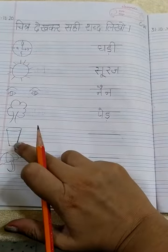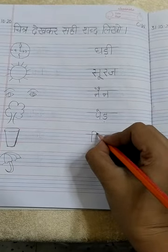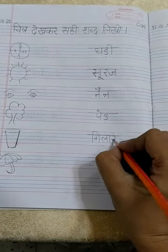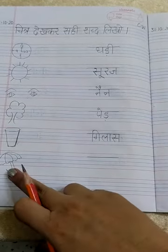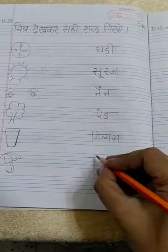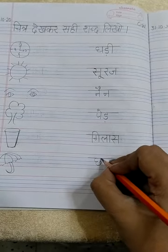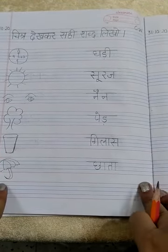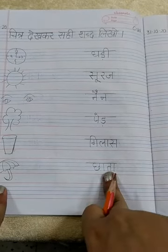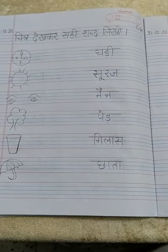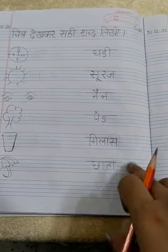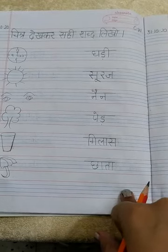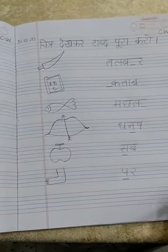यह कौनसा चित्र है? गिलास. गिलास. यह कौनसा चित्र है? छादा. छा, तापया की मात्रा, ता, चादा, यह लग्या की मात्रा. आपको एसे ही करना है जैसे मैंने आपको करके दिखाया. ठीके?